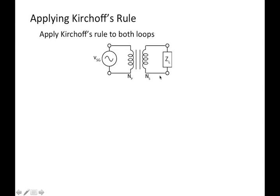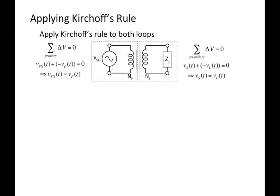The first thing to notice is that there are two loops: one on the left consisting of a signal generator attached to the primary coils, and one on the right with the secondary coils attached to the load impedance. For each of those two loops, we can apply Kirchhoff's loop rule. On the left side, that tells us the signal generator voltage equals the voltage across the primary, and on the right side, the voltage across the secondary equals the voltage across the load.